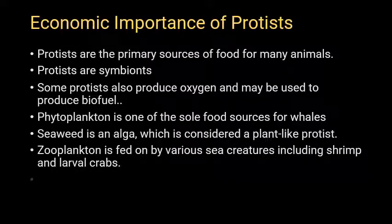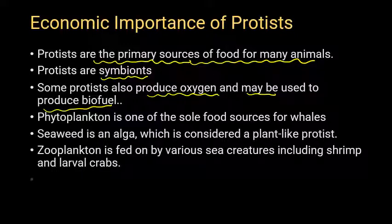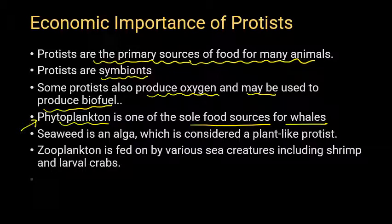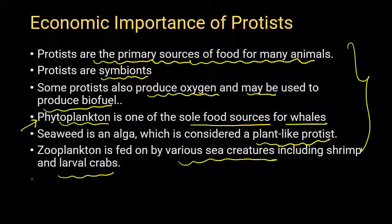The economic importance of Protists: Protists are primarily a source of food for many animals and occupy the very basic level in the food chain. They are symbionts, and some produce oxygen and may be used to produce biofuel. Phytoplankton is one of the primary food sources for aquatic organisms, and seaweed is an algae considered a plant-like protist.